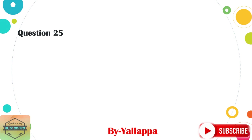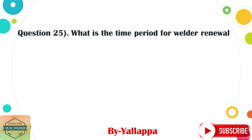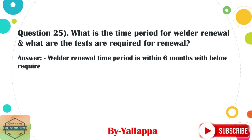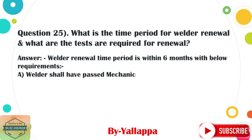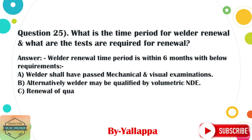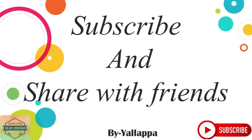Question 25: What is the time period for welder renewal and what tests are required? Answer: Welder renewal time period is within six months with the following requirements: (a) a welder shall have passed mechanical and visual examinations; (b) alternatively, a welder may be qualified by volumetric NDE. Renewal of qualification may be done on production work.